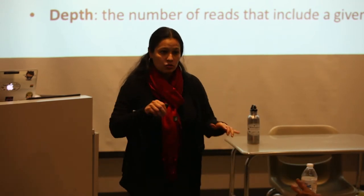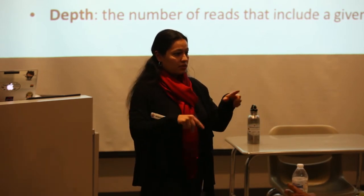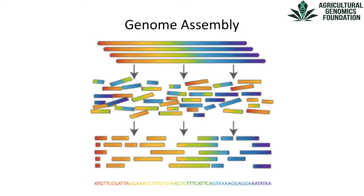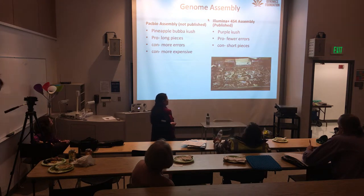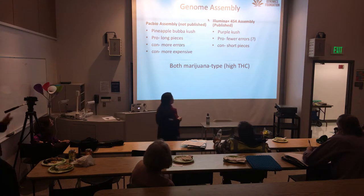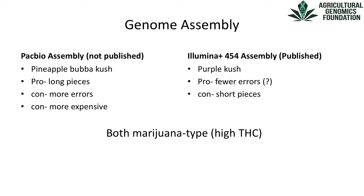We currently have two genome assemblies. One was published in 2011 and is publicly available. The other is not yet published but will be published with the paper I'm currently writing. Both assemblies were sequenced from marijuana-type plants — high THC varieties. One is a Pineapple Baba Kush and the other is a Purple Kush, sequenced by different technologies.